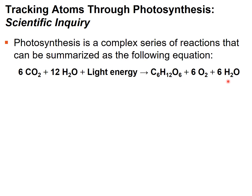Since cellular respiration is exergonic, reversing it makes photosynthesis an endergonic, anabolic process — energy must be input for it to proceed. That energy comes from light. Combining carbon dioxide with water and light energy allows plants and other photosynthesizing organisms to produce glucose, oxygen, and water.